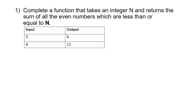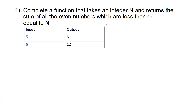Coming to this question: we have to complete a function that takes an integer n and returns the sum of all even numbers which are less than or equal to n. They have given some sample inputs — if the input is 5, the output would be 6, and if the input is 6, then we have to return 12.